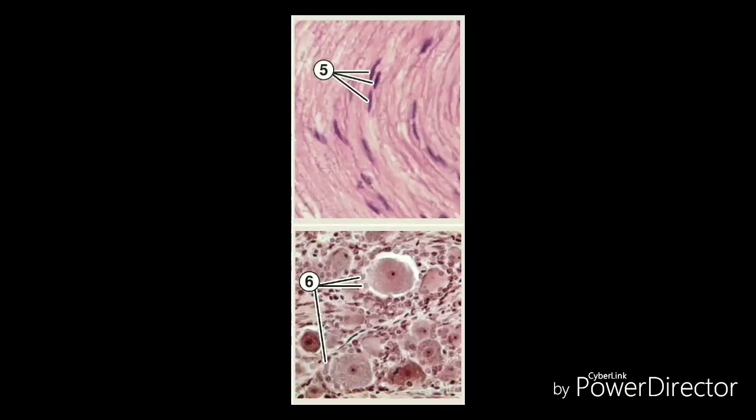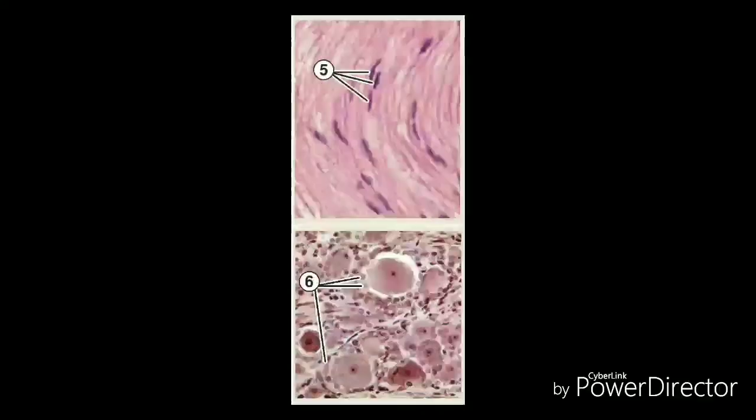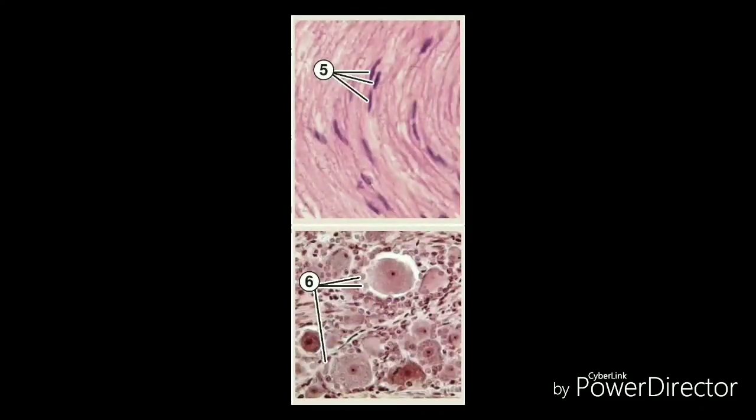The spinal nerves are numbered according to the vertebrae above which they exit the spinal canal. The eight cervical spinal nerves are C1 through C8. The twelve thoracic spinal nerves are T1 through T12. The five lumbar spinal nerves are L1 through L5, and the five sacral spinal nerves are S1 through S5. There is one coccygeal nerve.